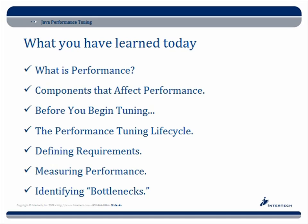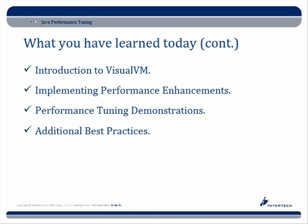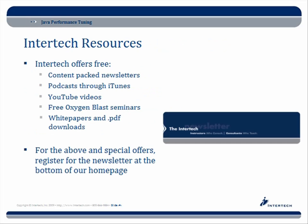After identifying bottlenecks, we looked at VisualVM as our profiling tool and how we can get more information from it. We covered what kind of performance enhancements you might want to consider implementing for common problems — such as what happens if you run out of memory, if a method is taking too long to execute, or if the garbage collector is running too frequently. We also looked at some quick tuning demonstrations and followed it up with additional best practices.